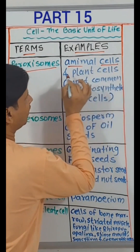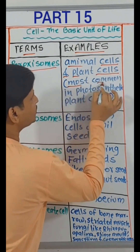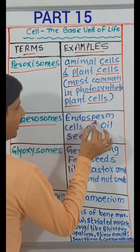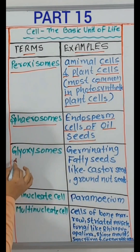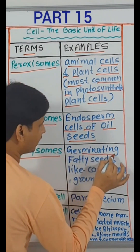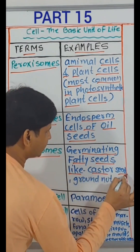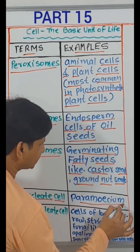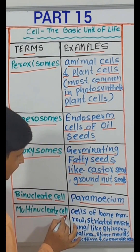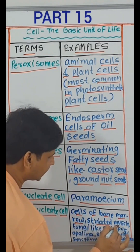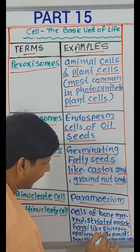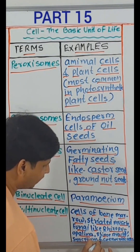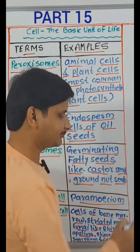Peroxisomes — animal cells and plant cells; most common in photosynthetic plant cells. Spherosomes — endosperm cells of oil seeds. Glyoxysomes — germinating fatty seeds like castor seeds, groundnut seeds. Binucleate cell — Paramecium. Multinucleate cell — cells of bone marrow, striated muscle, fungi like Rhizopus, Opalina, slime mold, syncytium and syncytial cells.